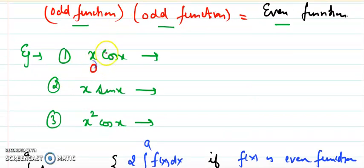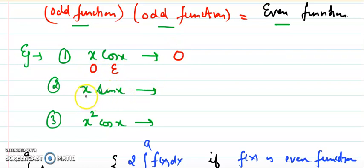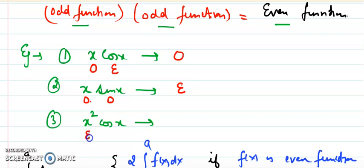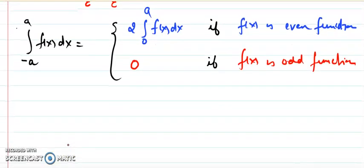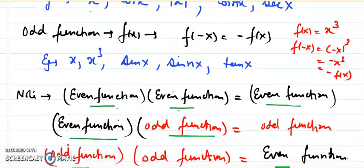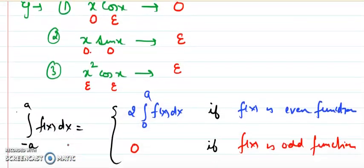Here are examples: x is an odd function and cos x is an even function — when even and odd are multiplied, the result is an odd function. Similarly, x is odd and sin x is odd — when odd and odd are multiplied, we get an even function. And x² is even and cos x is even — even times even gives an even function.